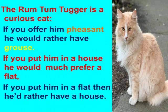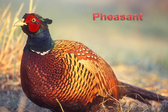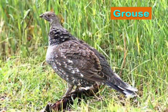That's why, in the very first line, the poet is saying, The Rum Tum Tugger is a curious cat. If you offer him pheasant — a pheasant is a large fat bird with a long tail; in Hindi, we call it Titar — then he would love to have a grouse. Grouse is a small fat bird. It means the cat is dissatisfied with what is given to him. If you give him a pheasant, then he would rather want to have a grouse.